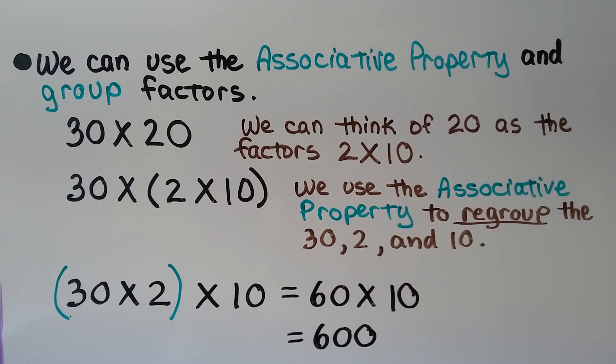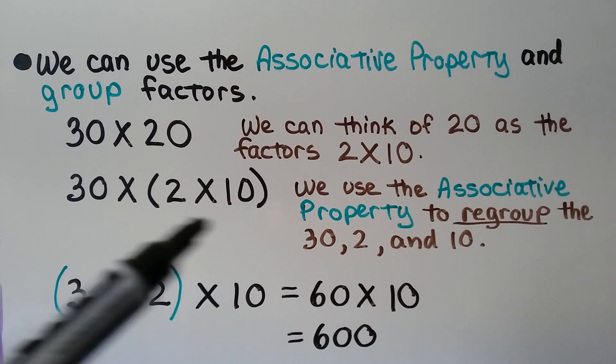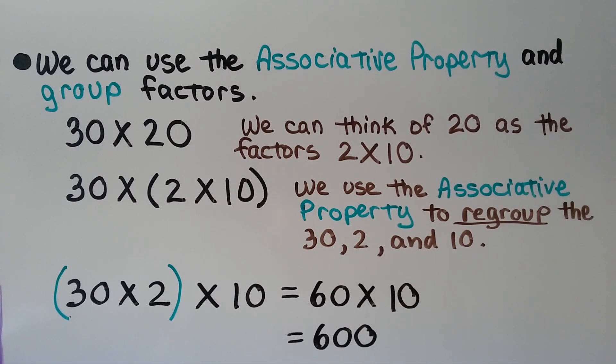For our next strategy, we can use the associative property and group factors. For 30 times 20, we can think of 20 as the factors 2 times 10. So we have 30 times 2 times 10. We use the associative property to regroup the 30, the 2, and the 10. So we group the 30 and the 2 together, and now the 10 is on the outside of the parentheses. 30 times 2 is 60. Now we have 60 times 10, which is equal to 600.